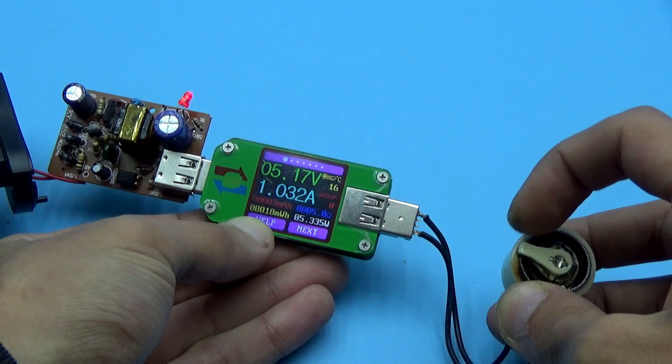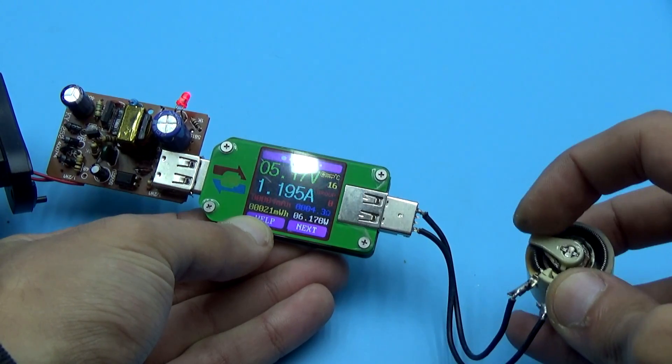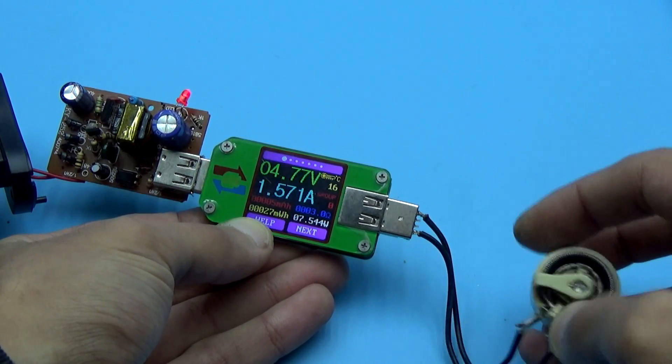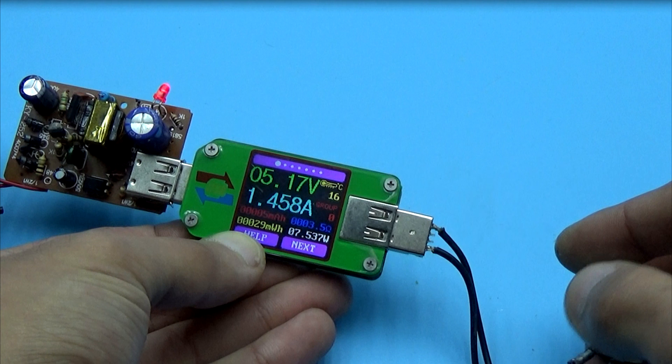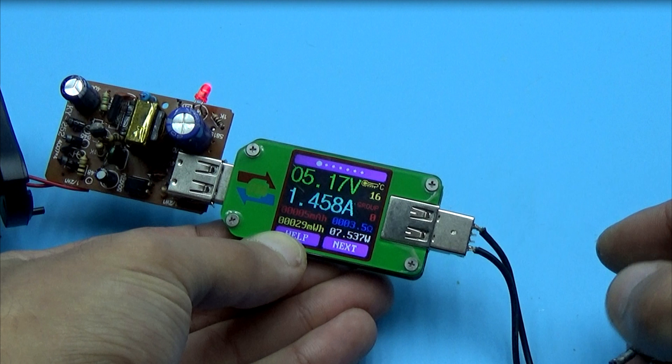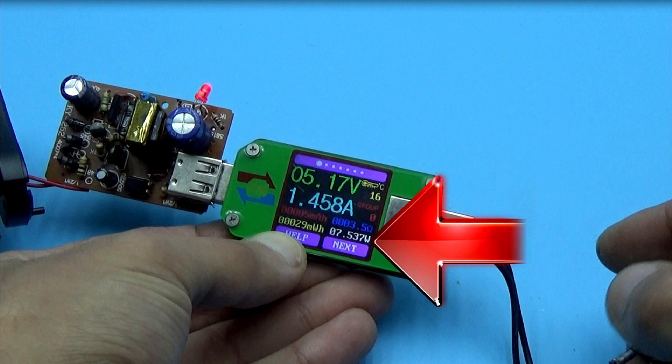In the range from 1 to 1.3 Amperes, no noticeable drawdown is observed. And, this is the maximum that I managed to get. Above that value, the protection works. Now, the output power of the unit is almost 8 watts. And, at the beginning there was only 4. The result is obvious.